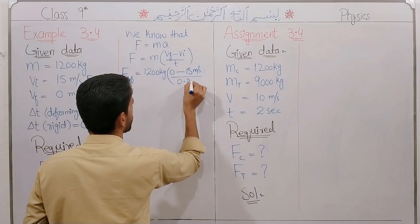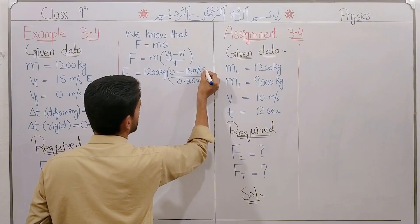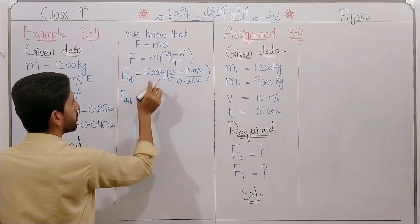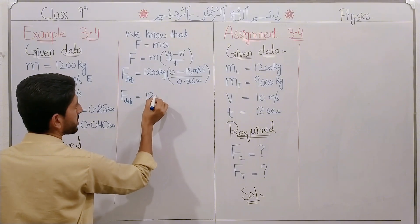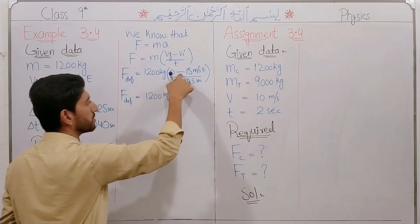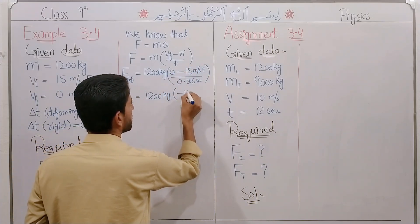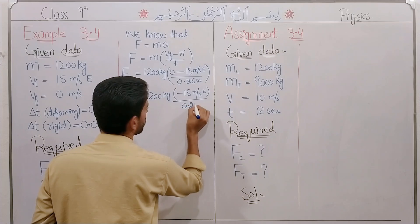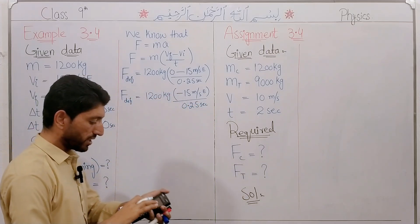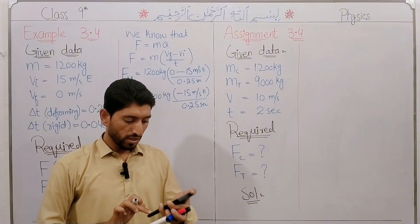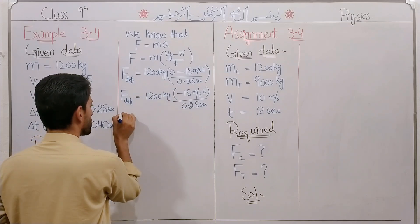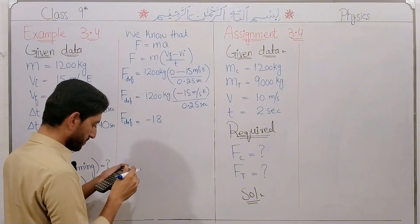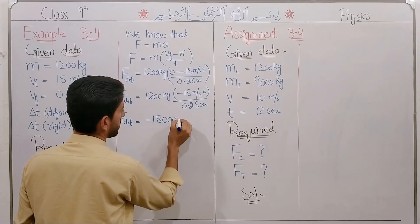Now for calculation, the deforming force is equal to mass times the quantity final velocity minus initial velocity, divided by time. So: 1200 kg multiplied by zero minus 15 meters per second, divided by 0.25 seconds. That gives us minus 15 multiplied, so the deforming force is equal to 1200 multiplied by minus 15.